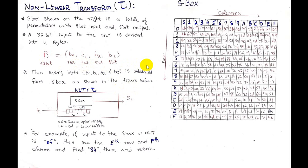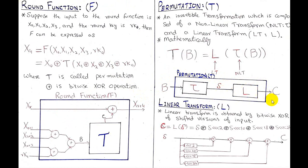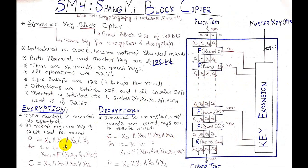After S-box substitution we combine the four output bytes and perform the linear transformation L to complete the round function process. We are simply replacing the lower and upper nibble values using the S-box table to get s0, s1, s2, s3 from b0, b1, b2, b3, then combining and applying L. This is how the round function of the SM4 block cipher is performed - both encryption and decryption use the same function.